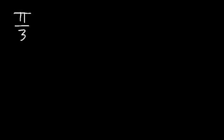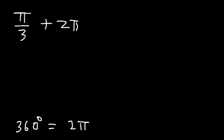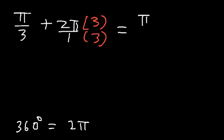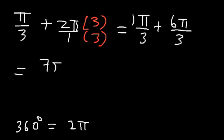What can you do if you're given the angle in radians? Let's say it's pi over 3. Find one positive coterminal angle and one negative coterminal angle. Since 360 degrees is equivalent to 2 pi radians, you add 2 pi and subtract 2 pi. To add, we need common denominators, so multiply 2 pi by 3 over 3. That gives 6 pi over 3. So pi over 3 plus 6 pi over 3 is 7 pi over 3.